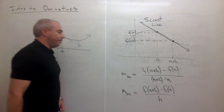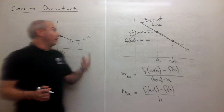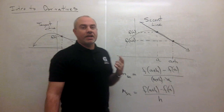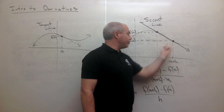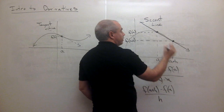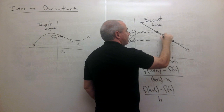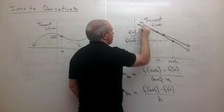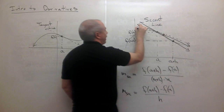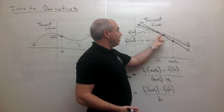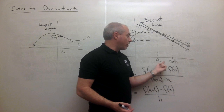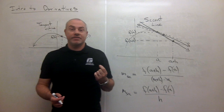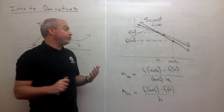This slope of the secant line is an estimate of the slope of the tangent line. To make the estimate better, I move the second point closer to the first. Instead of a plus h being far away, I bring it closer. As h gets smaller, the estimate gets better and better. So what if I took the limit as h goes to zero?